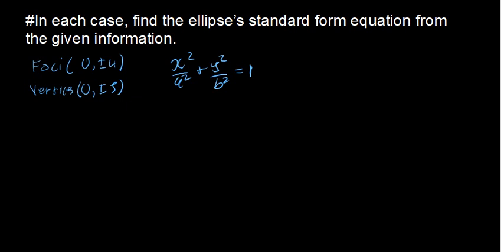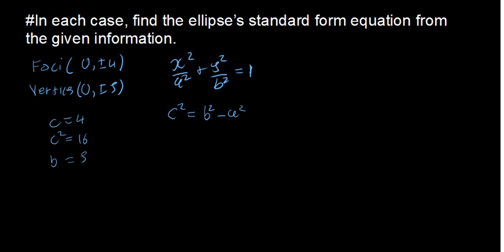To find c squared, since b is greater than a, we use c squared equals b squared minus a squared. For the foci, 0 comma positive or negative c, so c equals 4, meaning c squared equals 16. For the vertices, this is the value of b, so b equals positive or negative 5, and b squared equals 25.